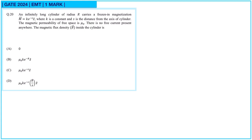Next question. An infinitely long cylinder of radius r carries a frozen-in magnetization. Here M bar is given as M bar equal to k e raised to minus s, z cap, where k is a constant and s is the distance from the axis of the cylinder. The magnetic permeability of free space is μ₀. There is no free current present anywhere. The magnetic flux density B bar inside the cylinder is?